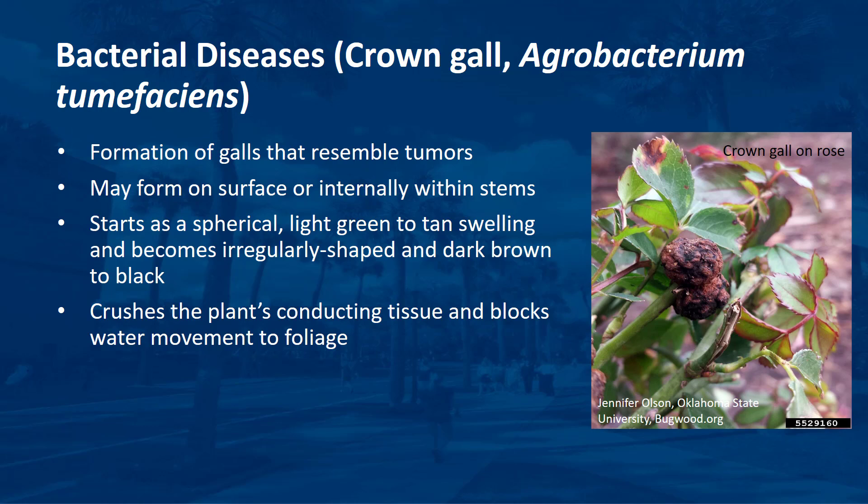Within a matter of weeks after initial infection, the swelling takes on a spherical shape and becomes light green to tan in color. The gall then becomes irregular in shape and turns dark brown or black because of plant cells dying on the gall's surface. As the gall enlarges, it crushes the plant's conducting tissue and blocks water movement to the foliage.